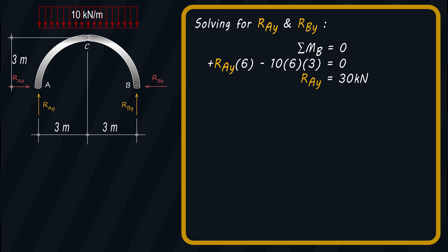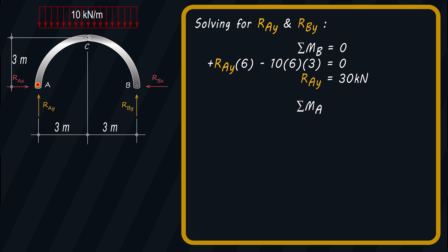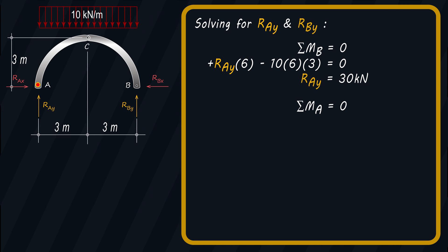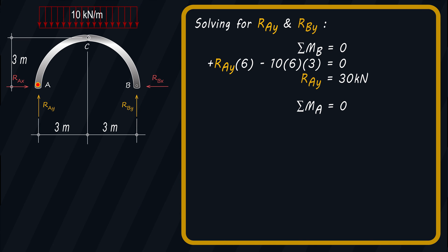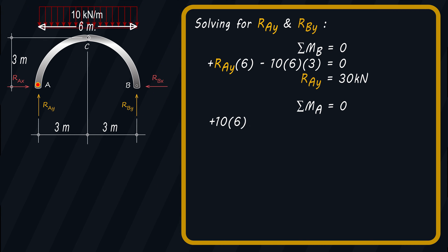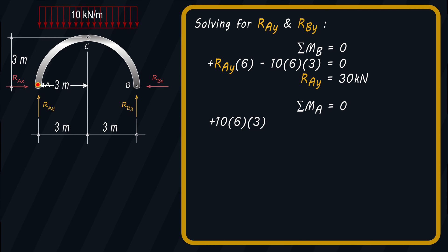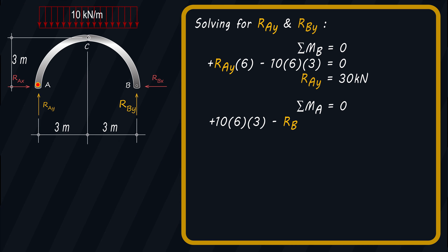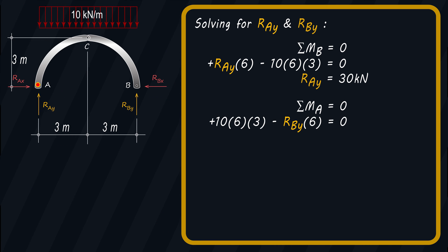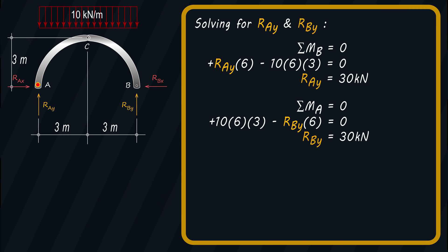Now, summing the moment at point A, which should also be equal to zero, and also taking the clockwise moment as positive, we have: 10 times 6 times 3 minus RBY times 6 equals zero. Solving for RBY, the result is equal to 30 kN.